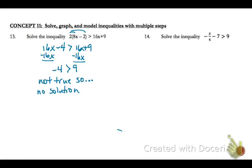So on number 14, let's take a look at this problem. Well, the first thing we need to do to get x by itself is to add 7 to both sides. So we'll just bring down negative x divided by 4 is greater than 9 and 7 is 16.